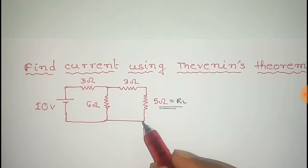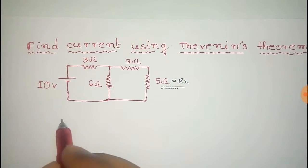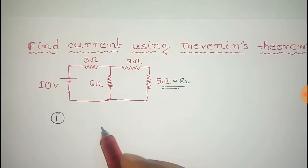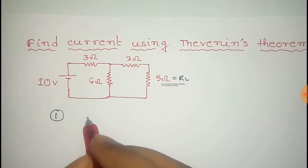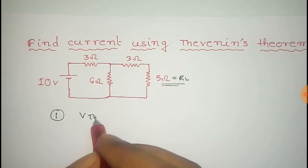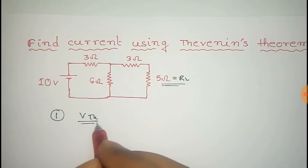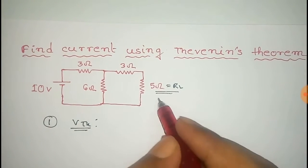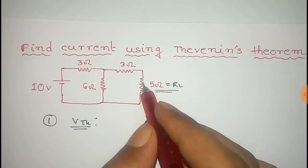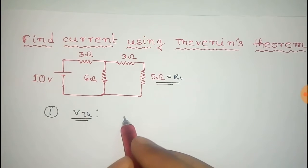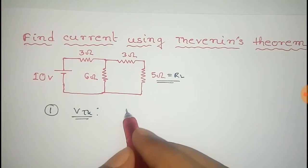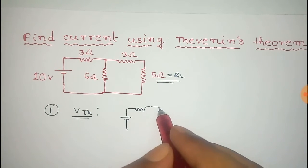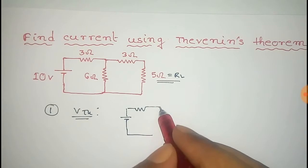For using Thevenin's theorem, the first step is to find the Thevenin voltage, that is Vth. To find the Thevenin voltage, we have to open this load resistor. So open this load, and after opening this load resistor, the circuit will be like this.